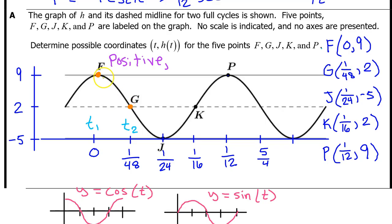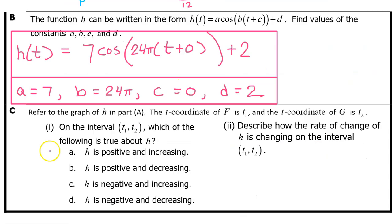Also, between t1 and t2, h(t) is decreasing. We can see that the output values are falling from left to right. So on the interval from t1 to t2, h is positive and decreasing. So the answer is b.